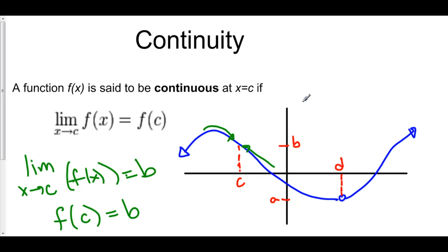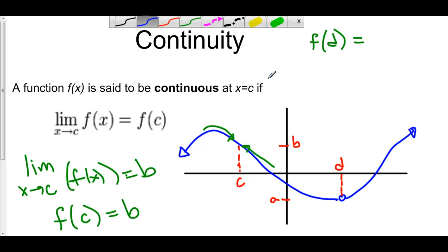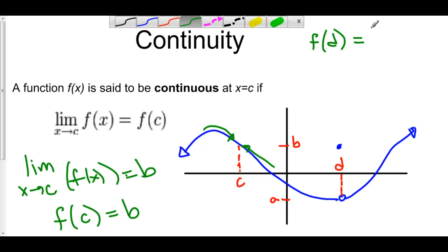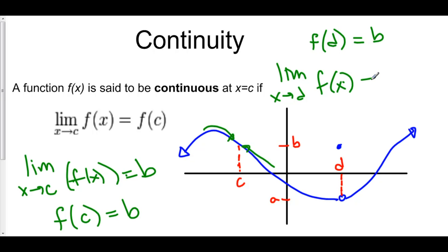Take a look at x equals d. If you want to find the function value at d, it doesn't exist. However, we can make it exist by just putting a point somewhere — let's put a point right here, so f of d equals b. However, if we take the limit as x approaches d of f of x, from the left-hand side we're approaching a, and from the right-hand side we're still approaching a. Therefore the limit as x approaches d equals a. Because the function value doesn't equal the limit, this is not continuous — f has a discontinuity at x equals d.